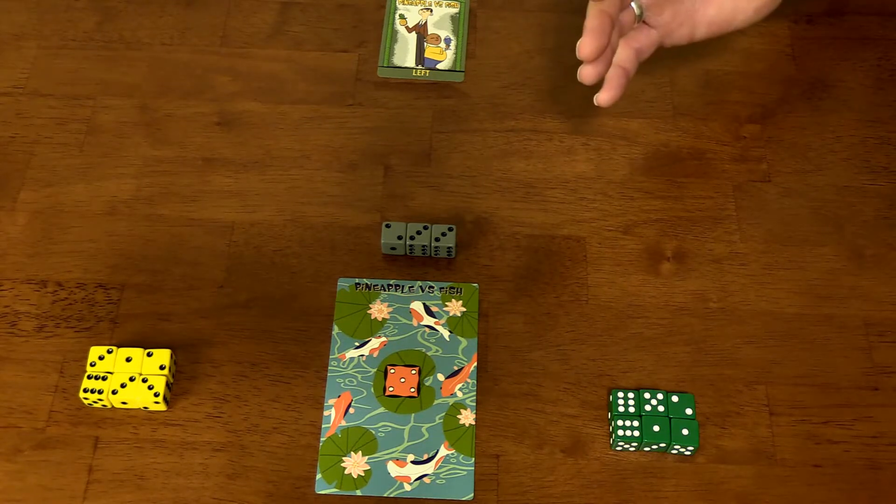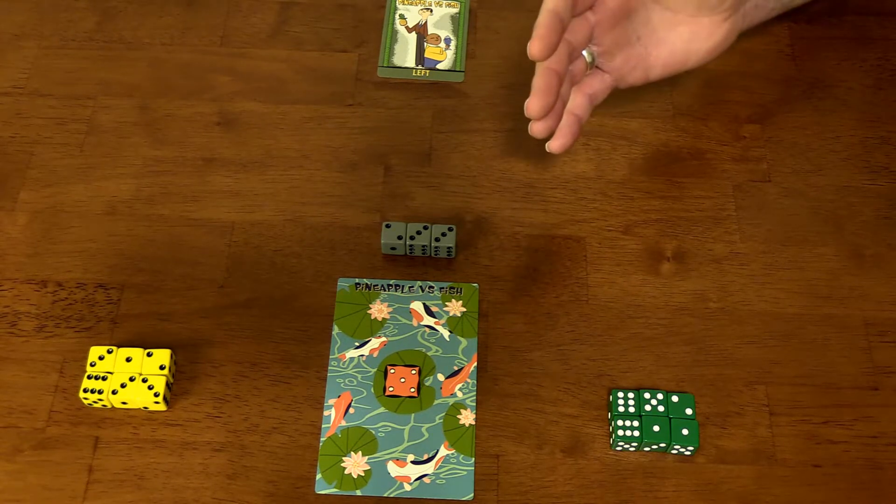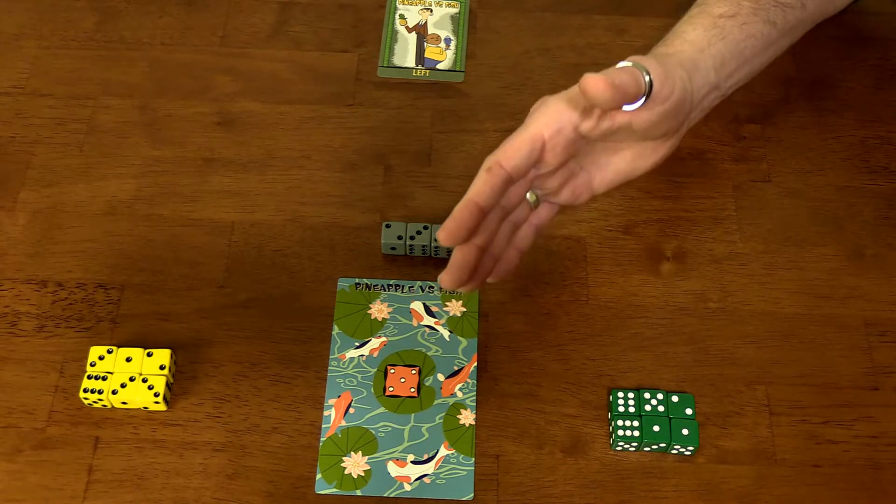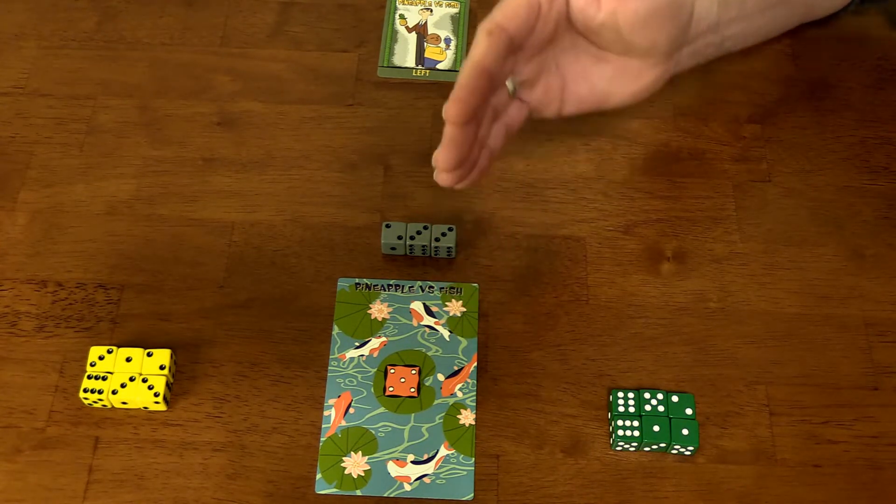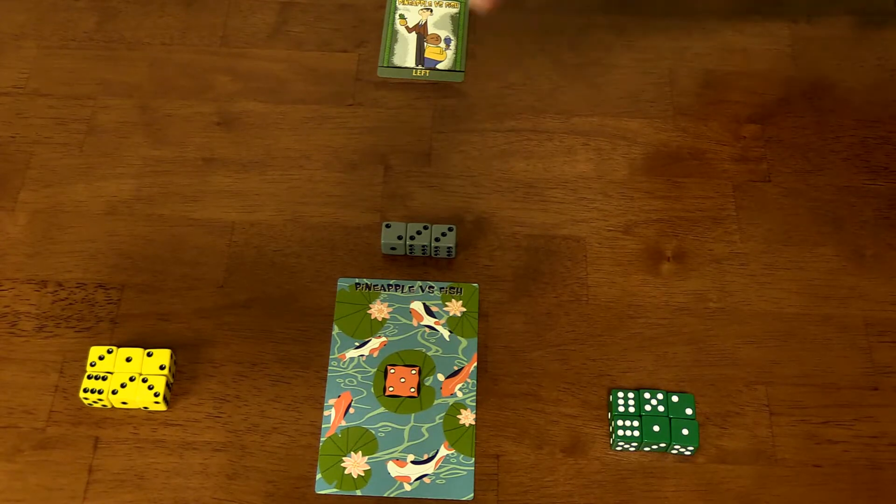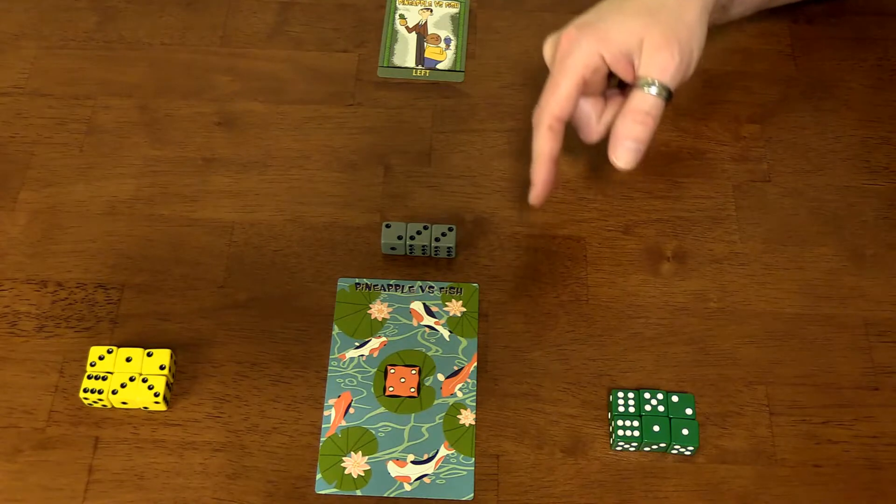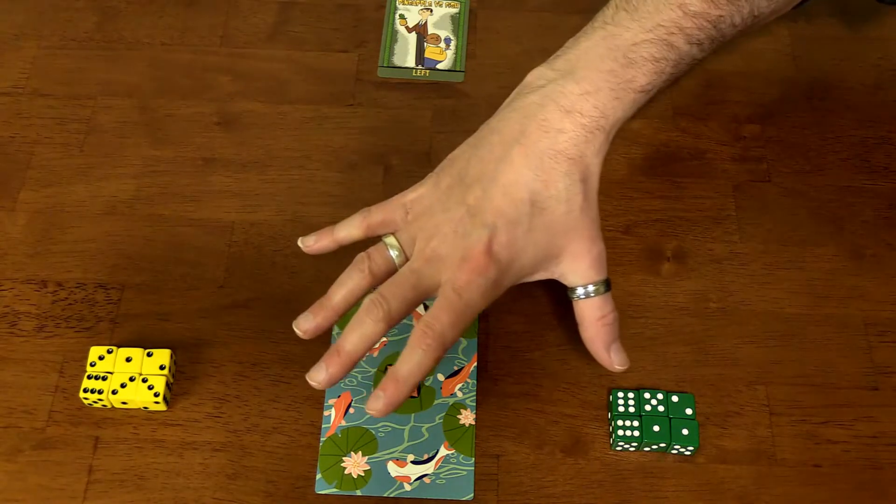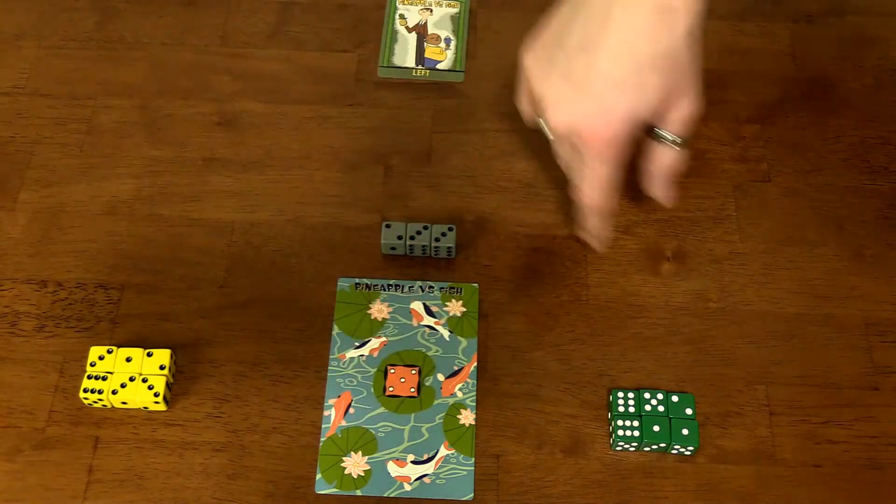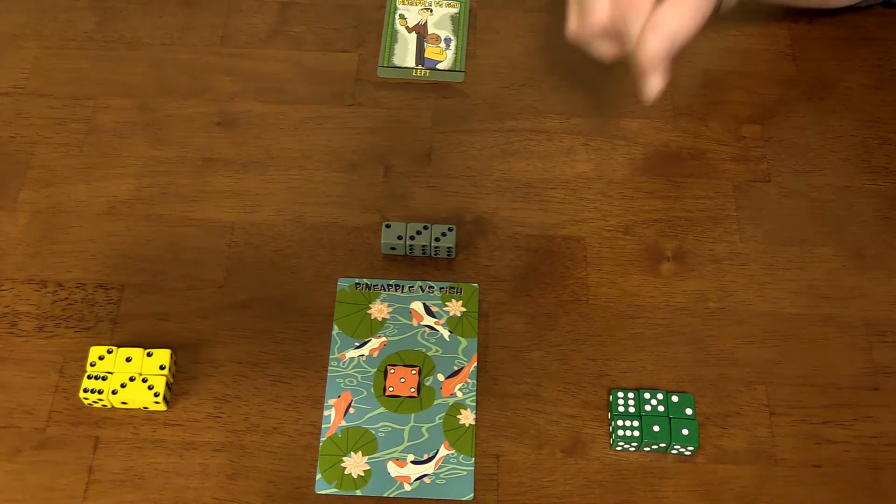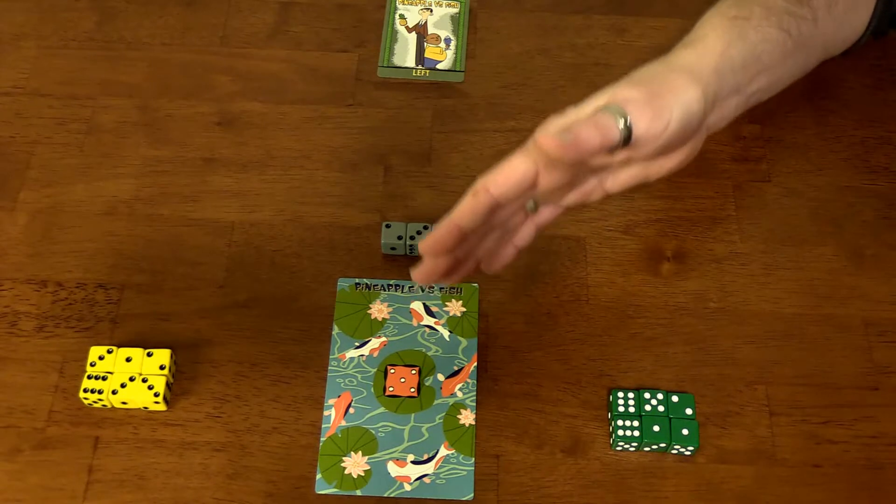The way it's scored is pineapple is going to get 100 points for every colored dice that's in that tower as it stacks up. Fish is going to get 100 points for every dice that falls outside this playmat if the tower tips over.